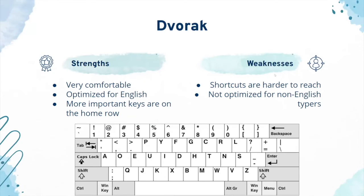Next, we can take a look at Dvorak. This is a different keyboard layout than the other three and it has some special strengths. It's very comfortable and optimized for English because the way it's arranged puts more important keys on the home row, making them easier to press when you need them.